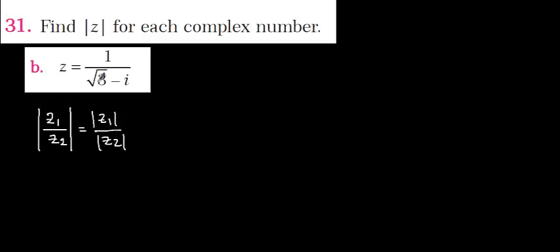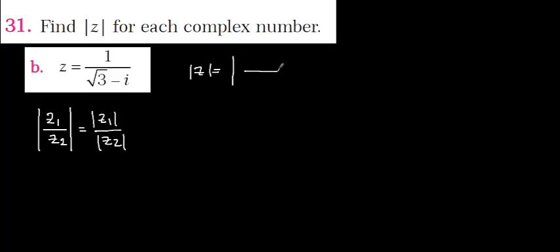There are two methods here. You can multiply by the conjugate, find z, and then get the modulus of it. Or you can find the modulus of each term — the numerator and the denominator separately — and then get the modulus. The second method is easier, so I'm going to use the second method.